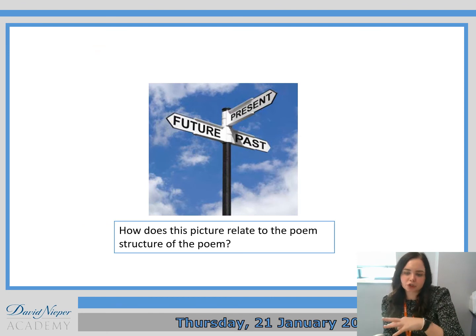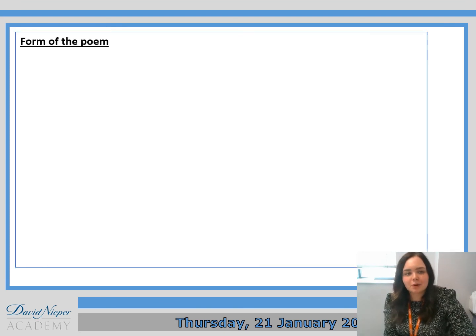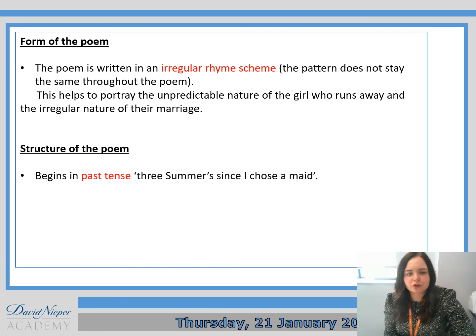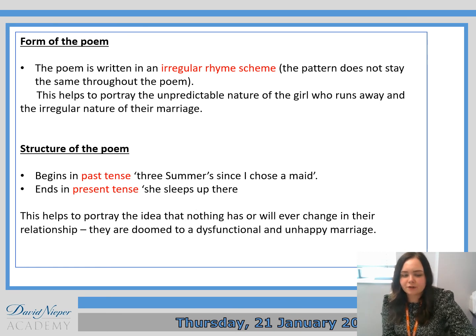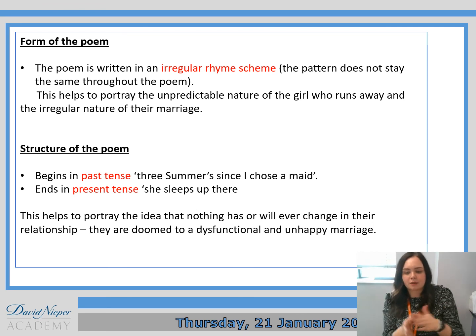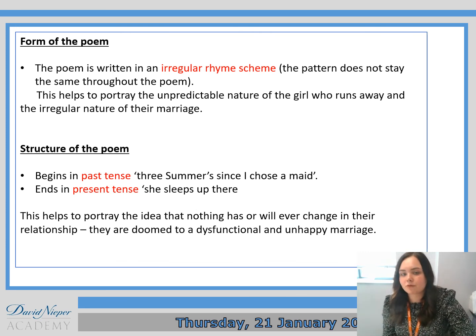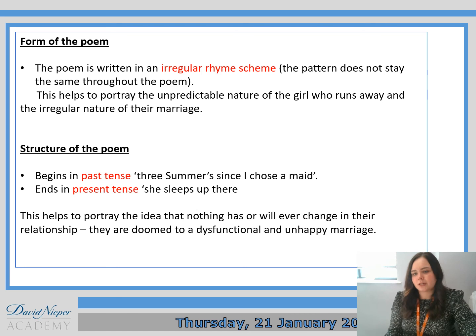How does this image relate to the structure of Charlotte Mew's poem? In terms of how I related this to the image, it was more to do with the structure than form. The poem begins in the past tense — 'three summers since I chose a maid' — and it ends in the present tense — 'she sleeps up there.' This helps to portray the idea that nothing has or will ever change in the relationship and they're doomed to a dysfunctional and unhappy marriage. Even though they've been together for quite a while, it hasn't changed and it's probably not going to. The form also features an irregular rhyme scheme — one of the first poems we've looked at with one — which portrays the unpredictable nature of the girl who runs away and the irregular nature of their marriage.